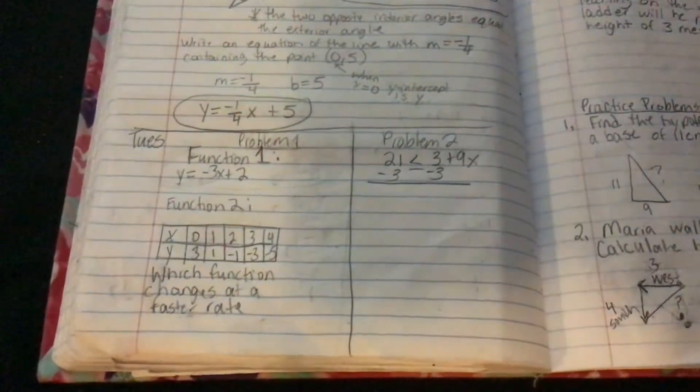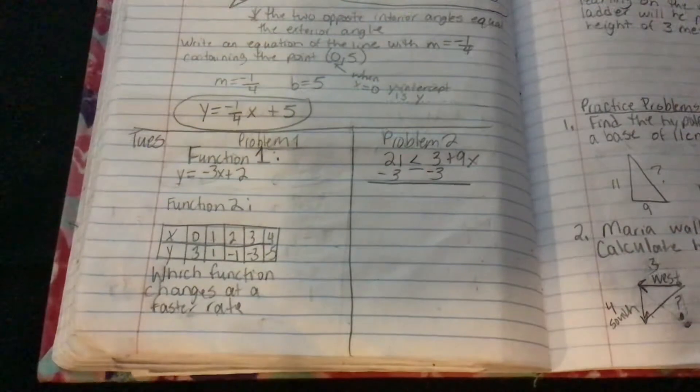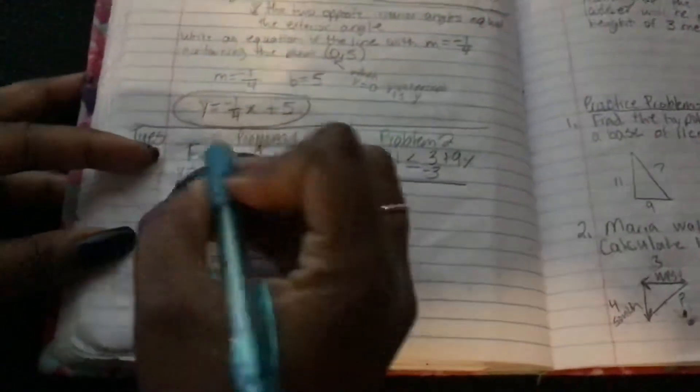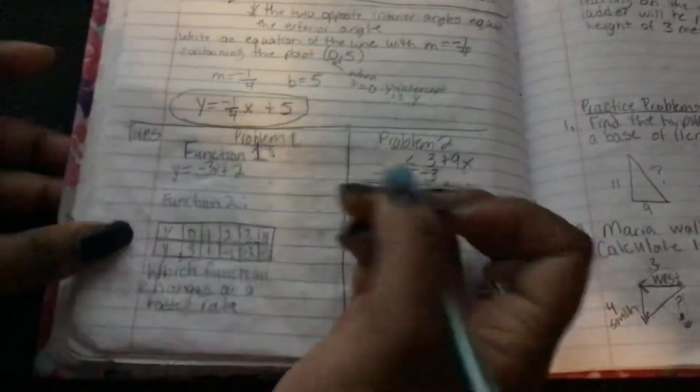Hi class, we're going to solve the word problems, warm-up problems for today. This first one says that function 1, this equation, y is equal to negative 3x plus 2.